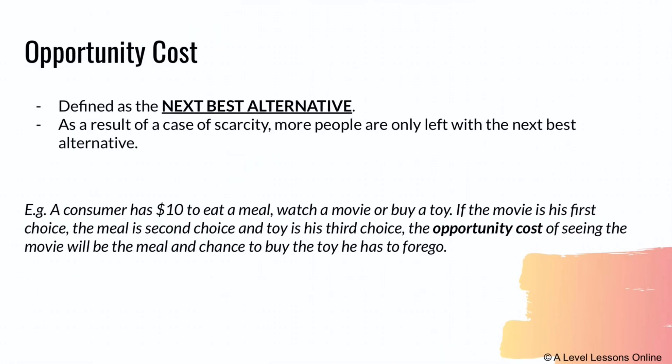Opportunity cost is defined as the next best alternative foregone. As a result of scarcity, people are left with only the next best alternative. For example, if I put you and someone else in a room and give you only one apple, and you can't get the apple, the next best option might be to eat a grape. If the other person grabs the apple first while you were distracted using your phone, that distraction costs you the opportunity — and you have to settle for the grape as the next best alternative.